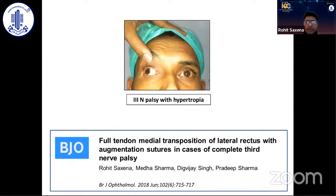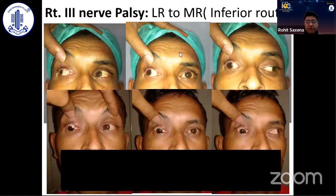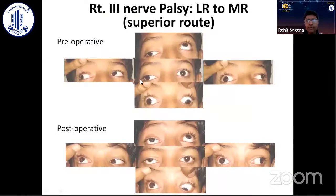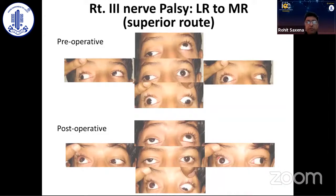If there is a vertical deviation along with a large horizontal deviation, the split lateral rectus transposition to the medial rectus will not correct for the vertical. We tried a full tendon transposition from the side opposite to the direction of deviation. In a case with exotropia and hypertropia, we shifted the entire lateral rectus to the inferior root medially, significantly correcting the vertical along with horizontal deviation. In another patient with significant hypotropia and exotropia, we transferred the lateral rectus underneath the superior rectus and superior oblique medially, achieving good vertical correction and primary gaze alignment.